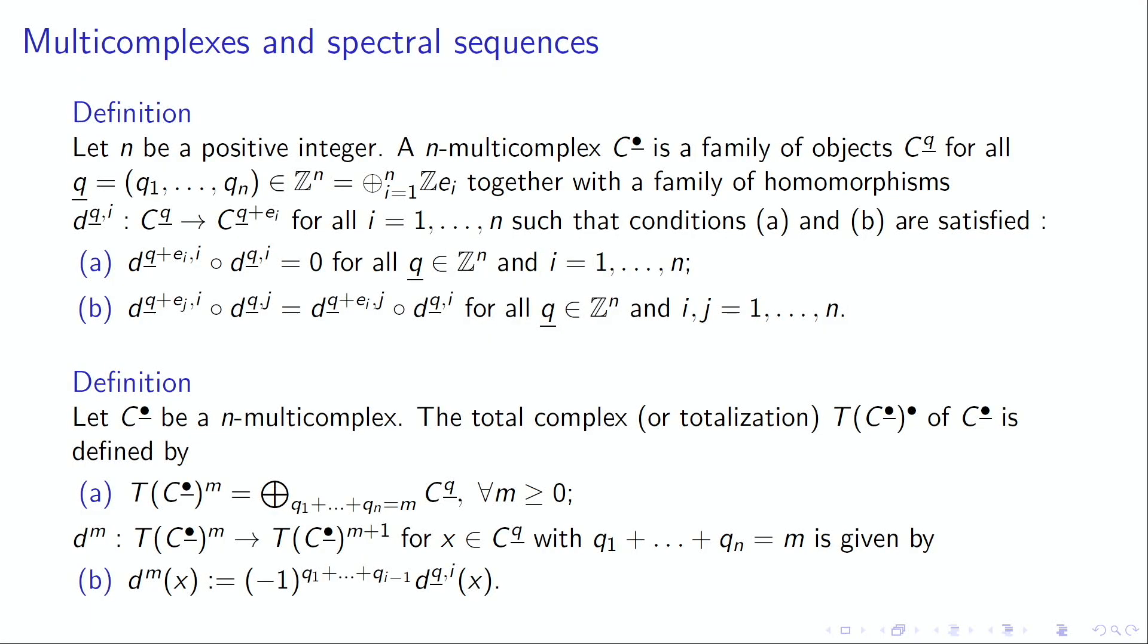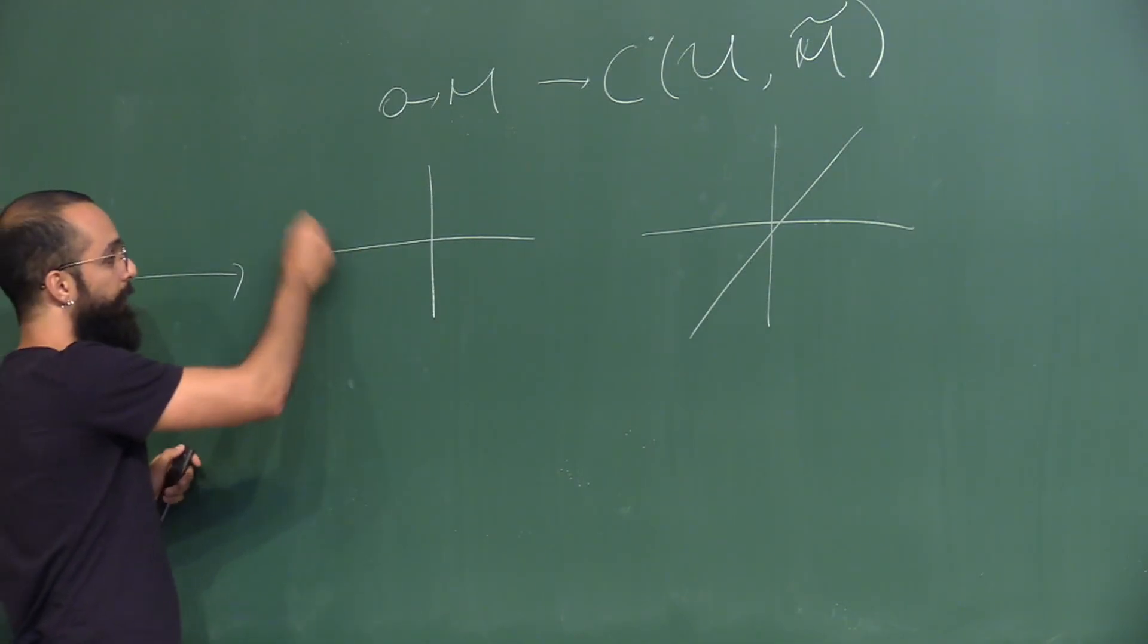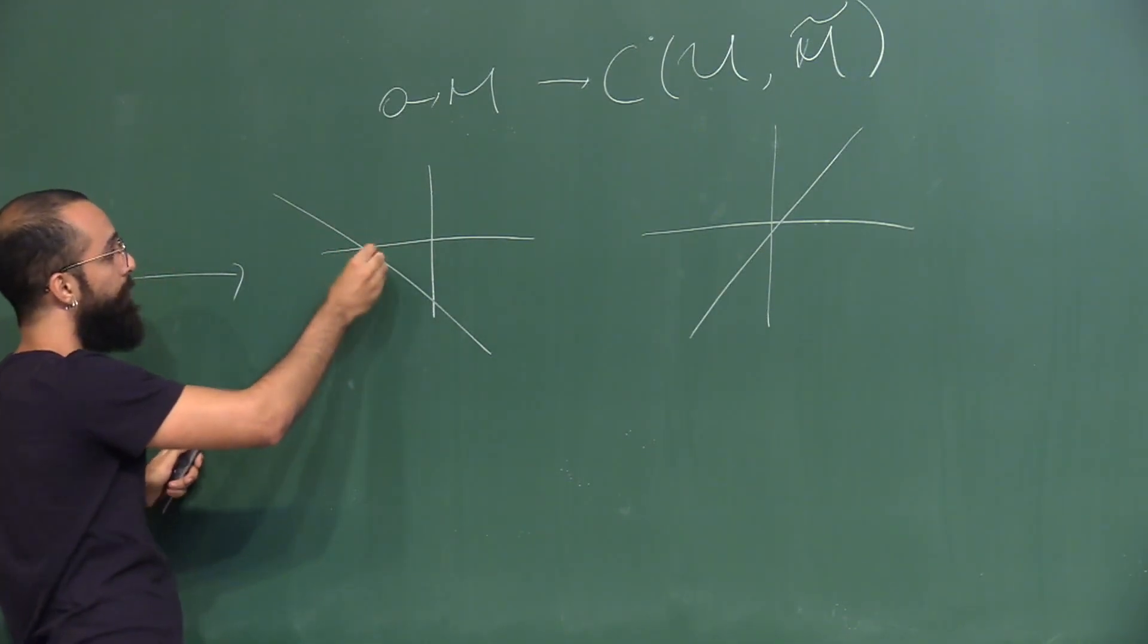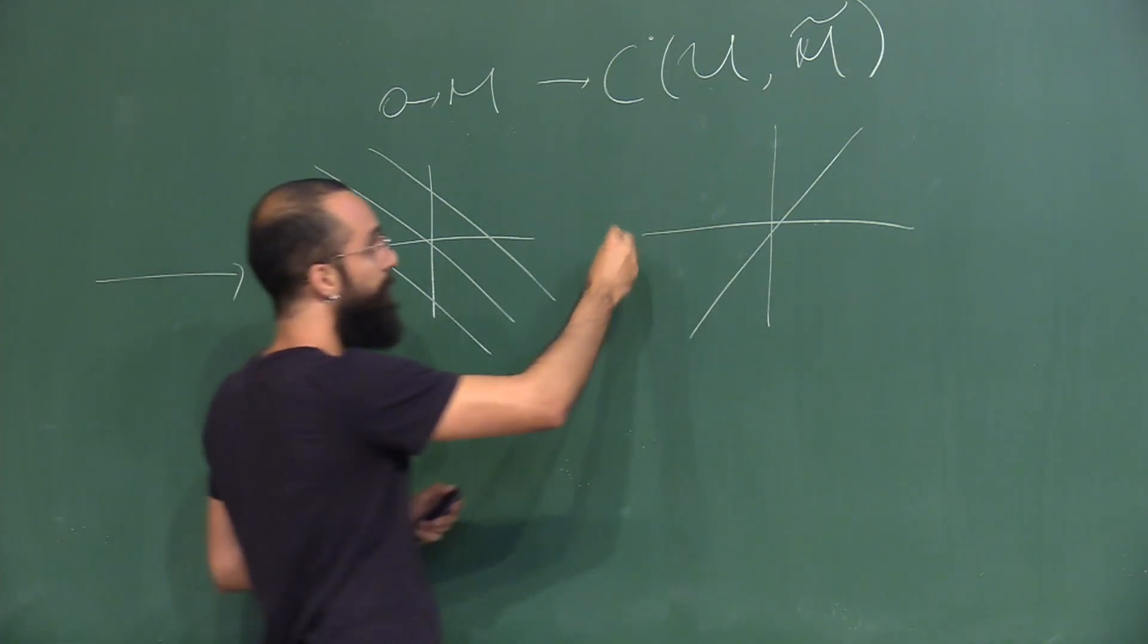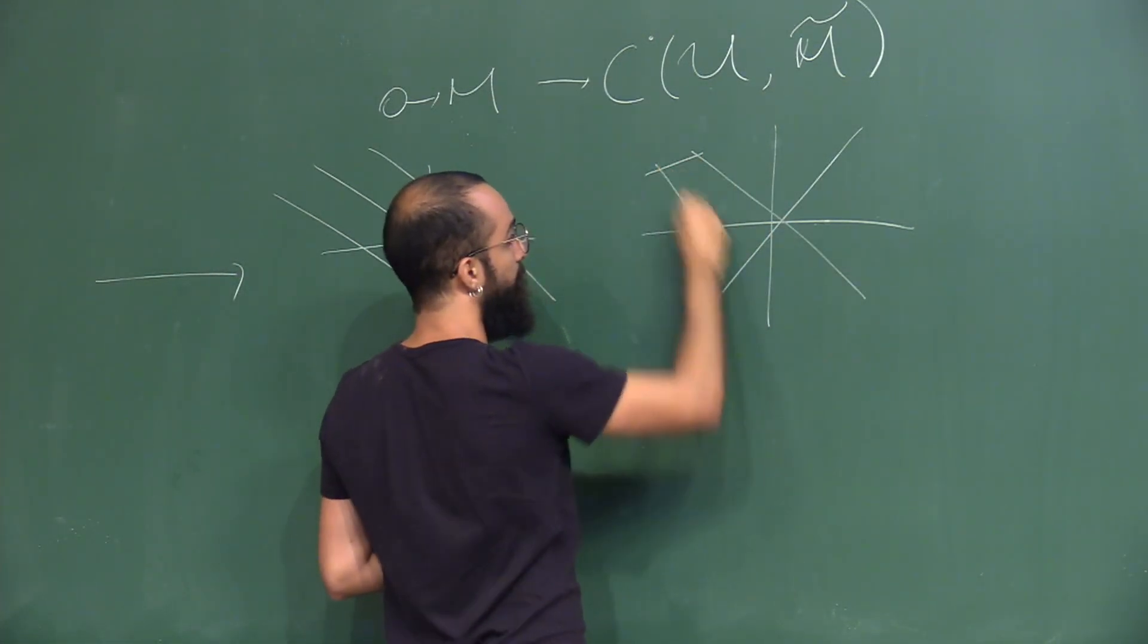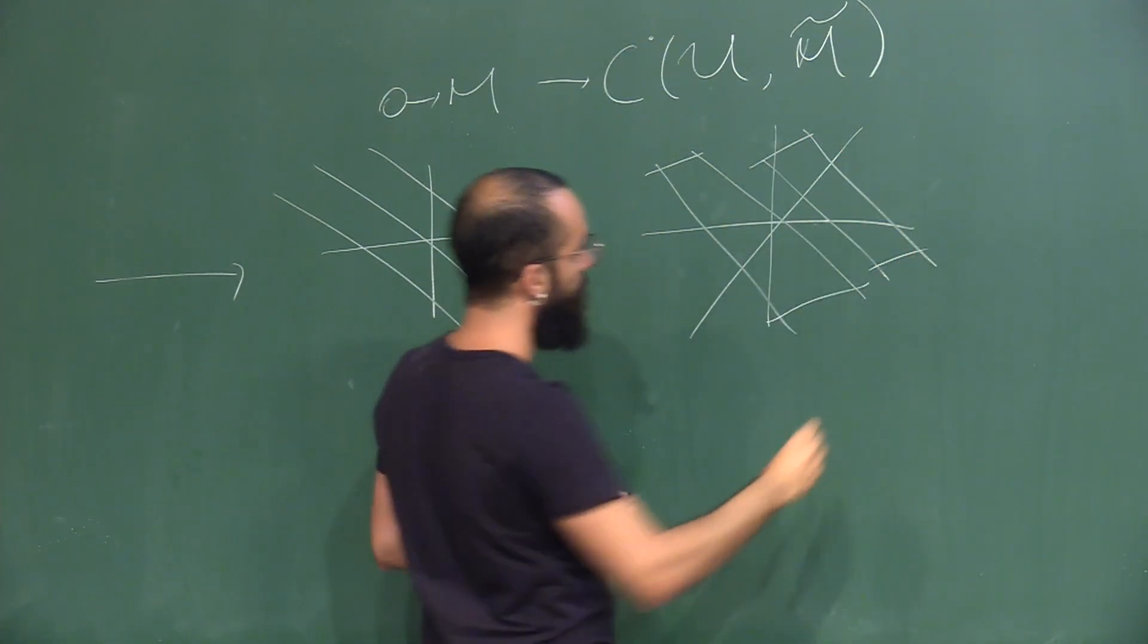We also have the total complex. As in the two-multicomplex case for double complexes, we define it in the same way. In a line, the total complex is the complex itself. In a plane we take diagonals like this. In space we take planes, and so on.